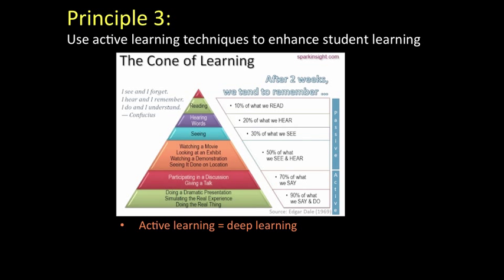The third principle relates to using active learning techniques to enhance your student learning. We know from the research that students learn more effectively when they engage in the learning process in ways that cause them to make meaning and apply that learning to different contexts. Contrast a student who sits passively in a lecture making notes with another student who is analysing what they're learning and using this to apply the knowledge to another context or to create a product that uses that knowledge. An active approach to learning causes students to learn more deeply and to remember what they've learnt.